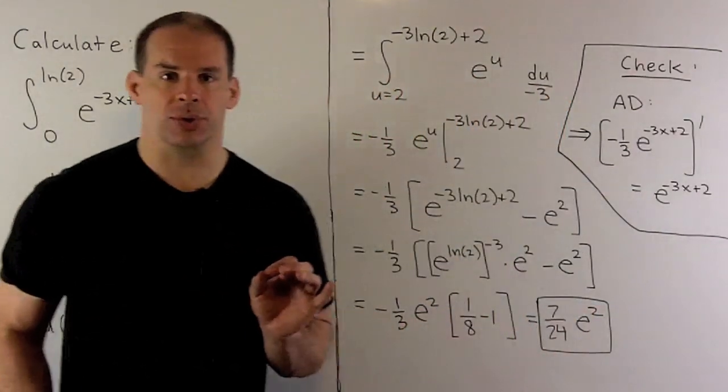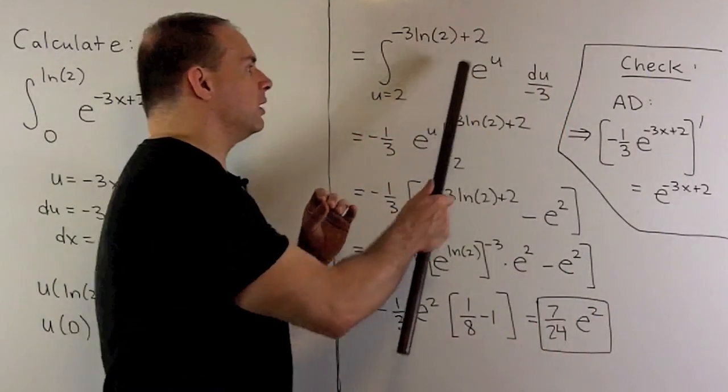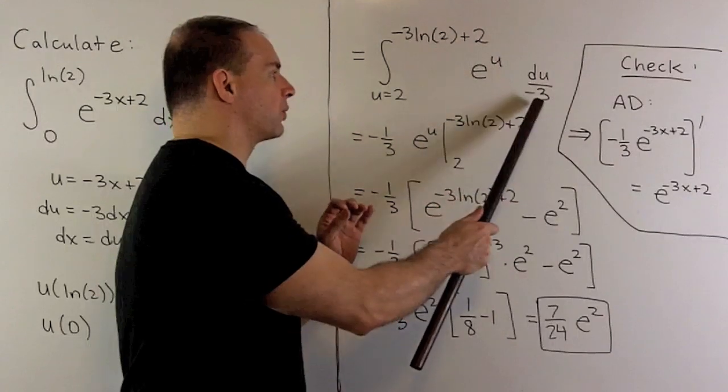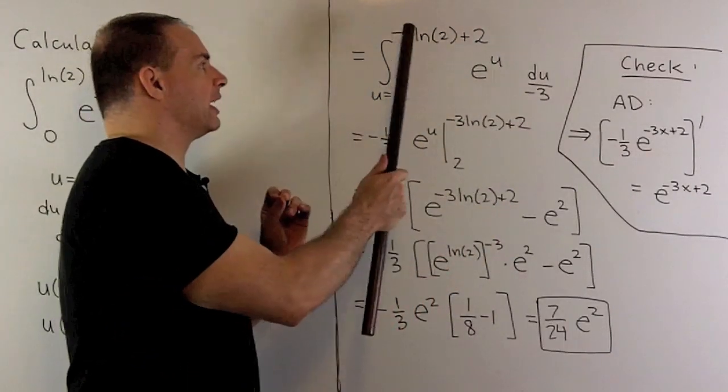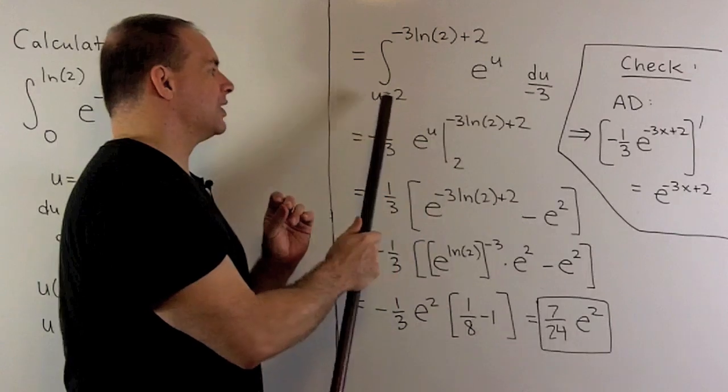Now we substitute. So I'll have e to the u du over minus 3. Then our limits become minus 3 natural log of 2 plus 2 and 2.